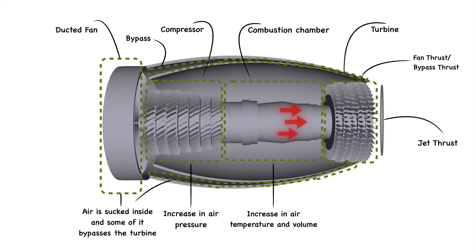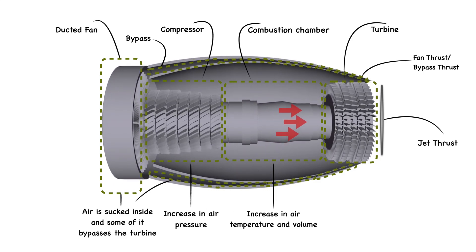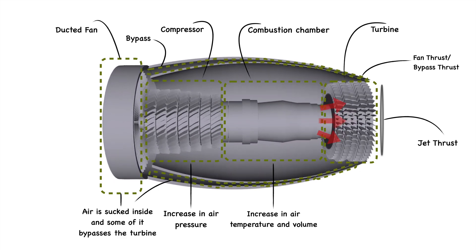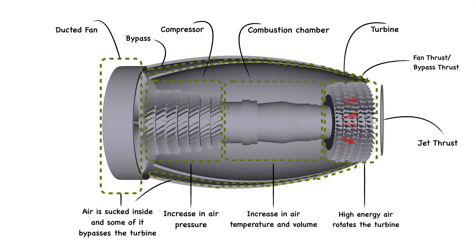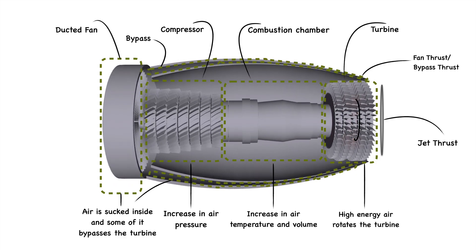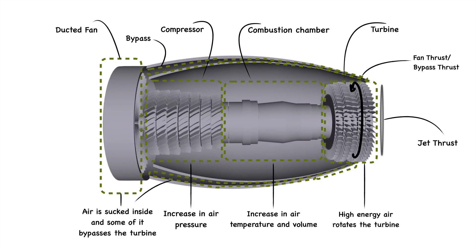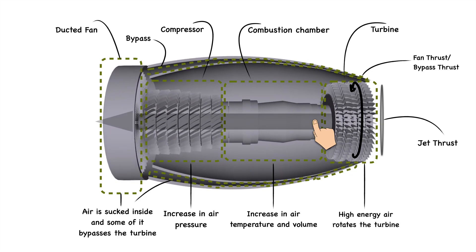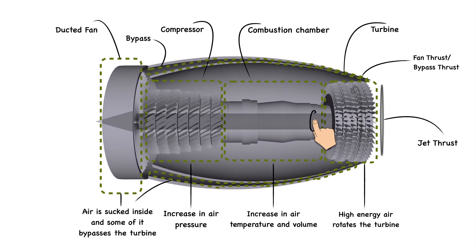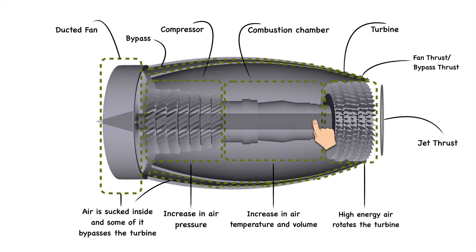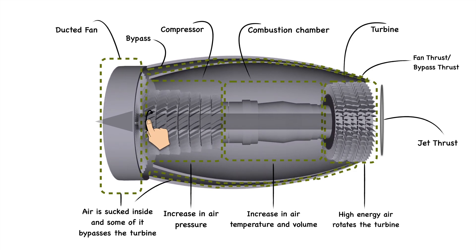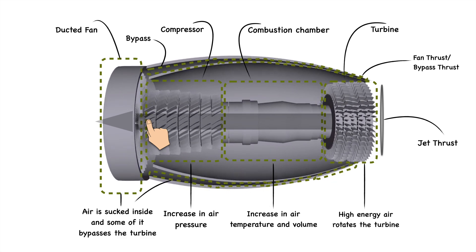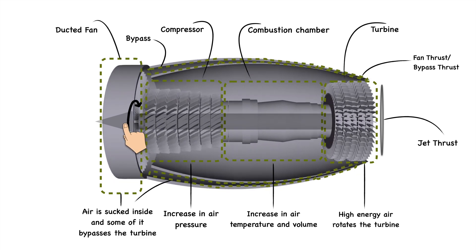After combustion, the gases are suddenly expanded and their volume is increased. When these high temperature, high energy, and suddenly expanded gases enter the turbine, they rotate the turbine. A shaft is connected with the turbine, so as the turbine rotates, the shaft starts rotating as well. This shaft is connected with the compressor and the ducted fan, so as the shaft rotates, it keeps the compressor and the fan rotating as well.